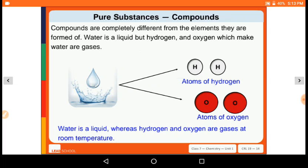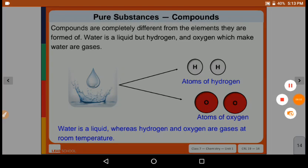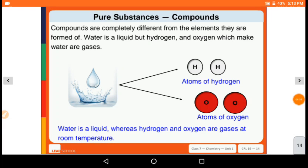Compounds are completely different from the elements they are formed of. Water is a liquid, but hydrogen and oxygen are gases. Water is a liquid, whereas hydrogen and oxygen are gases at room temperature.